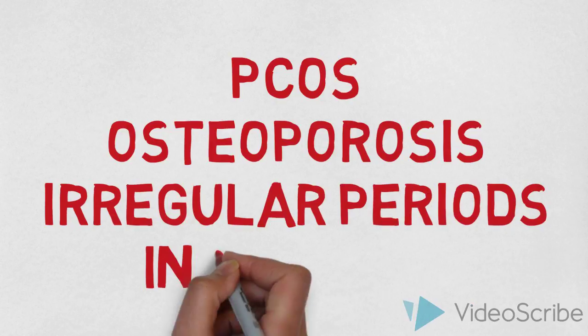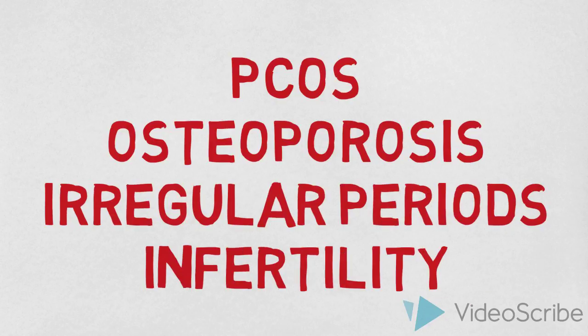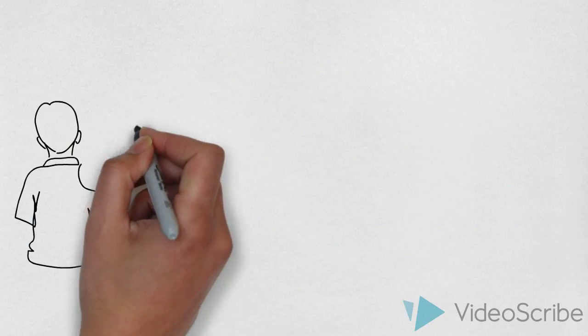Polycystic ovarian syndrome, weak bones called osteoporosis, irregular periods and problems associated with male and female infertility are some of the other problems in adults which are treated by endocrinologists.